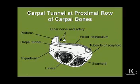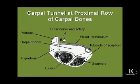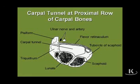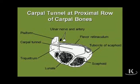Within the carpal tunnel are the median nerve and nine tendons. If the lunate displaces anteriorly, it displaces into the carpal tunnel. Anything that occupies space in the carpal tunnel is apt to cause injury to the median nerve. So a lunate dislocation is likely to be associated with median nerve compression in the carpal tunnel. That concludes our review of the clinically important elements of the upper limb.